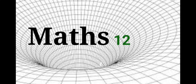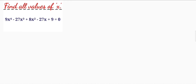Welcome to maths. Here my given equation is 9x raised to power 4 minus 27x raised to power 3 plus 8x raised to power 2 minus 27x plus 9 equal to 0.